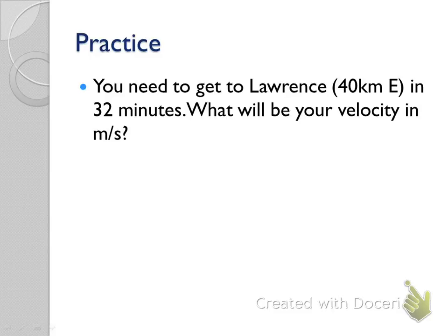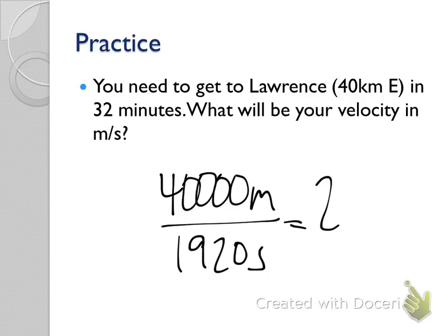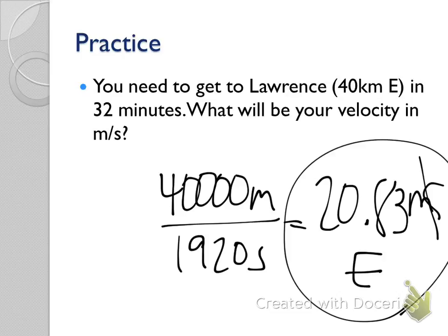Try this problem on your own: you need to get to Lawrence — 40 kilometers away — in 32 minutes. What will your velocity be in meters per second? The key thing that jumps out is unit conversion: convert 40 kilometers to 40,000 meters, and 32 minutes to 1,920 seconds. Dividing gives 20.83 meters per second east. Your answer must have units and direction — east is a positive direction, but it's good practice to write both.